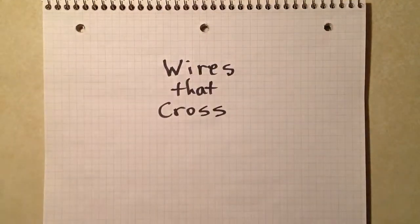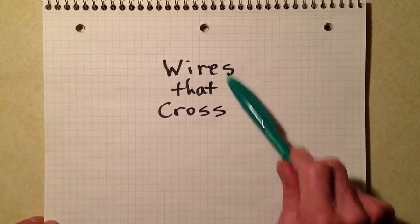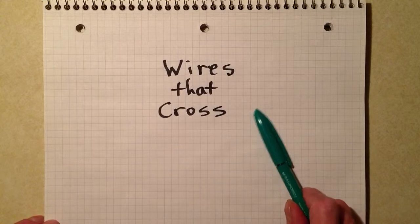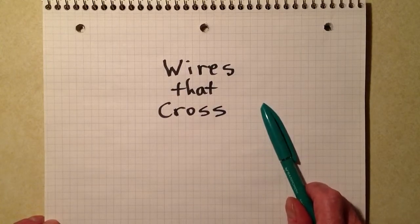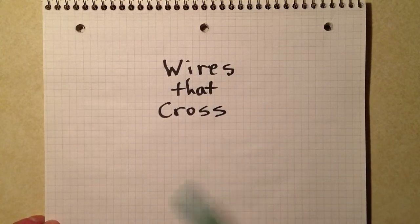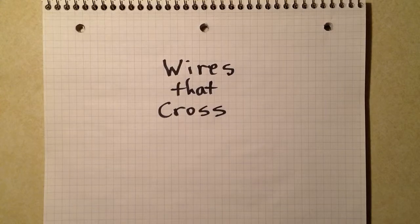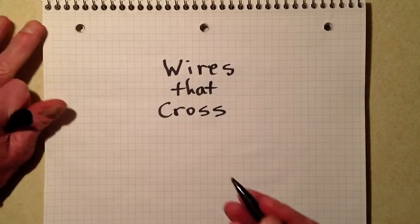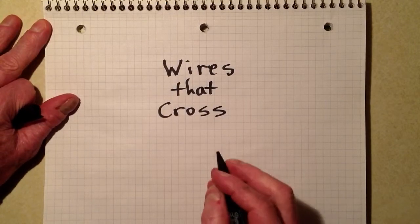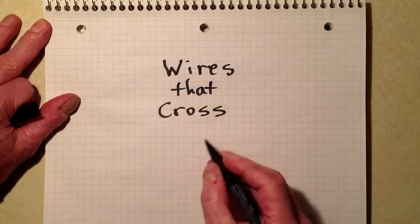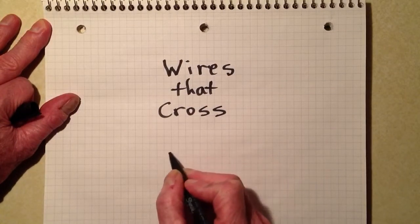The purpose of this particular tutorial is to explain a phenomenon in schematic diagrams that can be the source of some confusion and consternation if you're not careful, and that is when you have wires that cross over each other. You need to indicate in a schematic diagram that wires cross over each other.